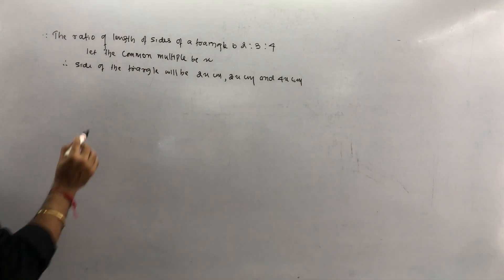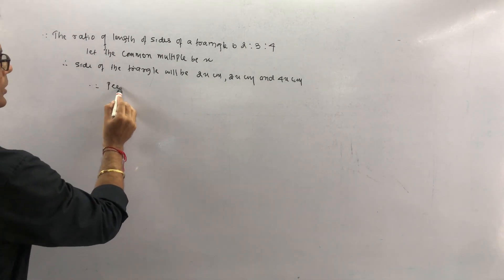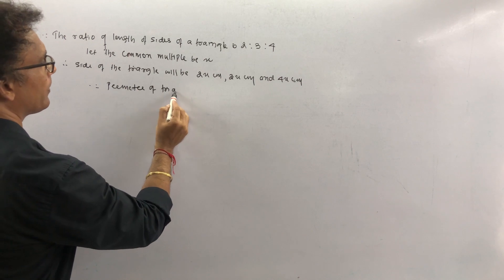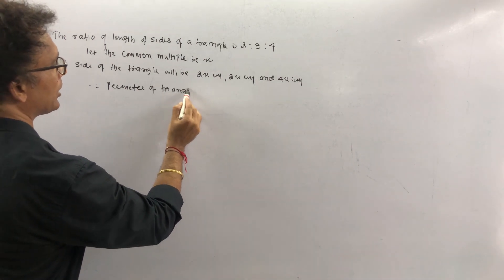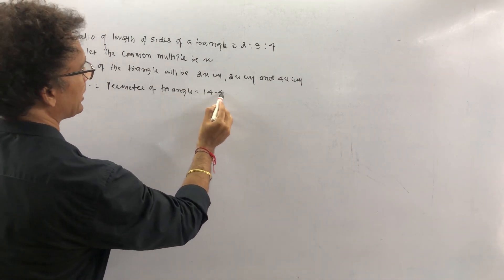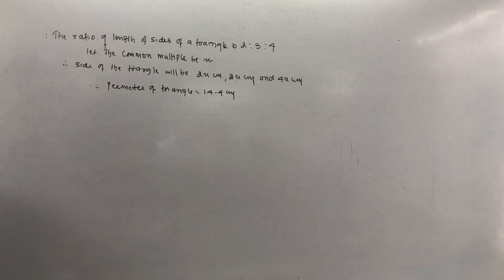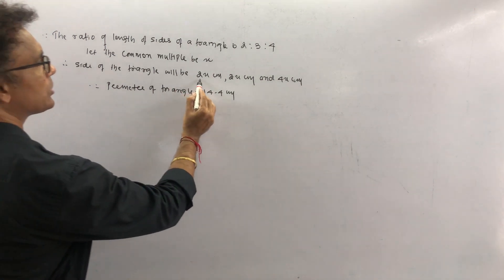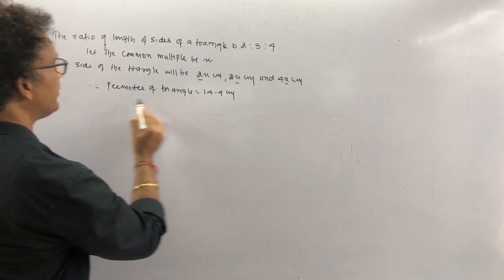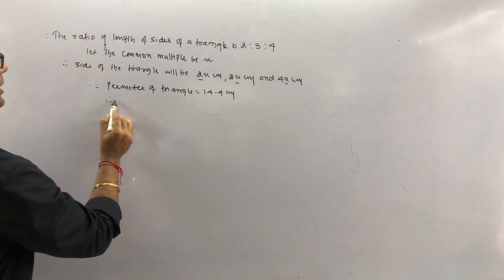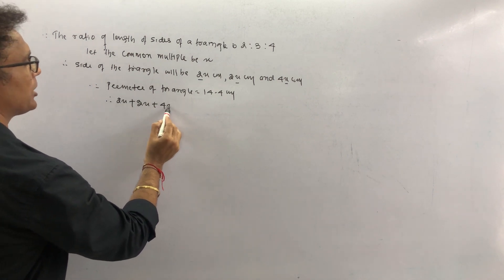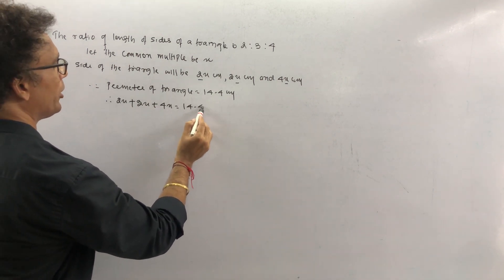Since the perimeter of the triangle is equal to 14.4 cm, and perimeter equals the sum of all sides, therefore 2x + 3x + 4x = 14.4.